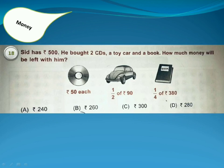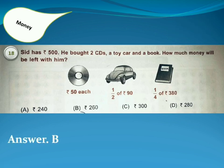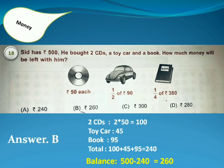Sid has 500 rupees. He bought 2 CDs, a toy car and a book. How much money will be left with him? Answer is Option B. Because 2 CDs cost 100 rupees, toy car costs 45 rupees, book costs 95 rupees. Total is 240. Sid has 500 rupees, so the balance amount will be 500 minus 240, that is 260.